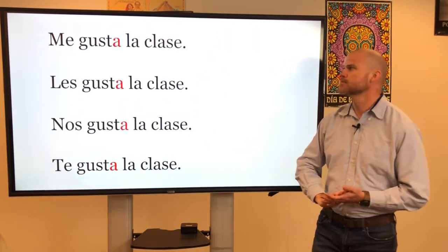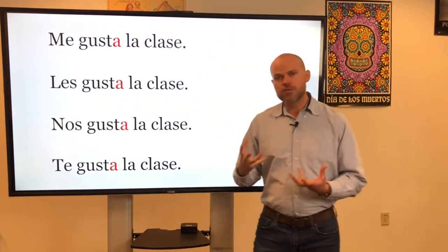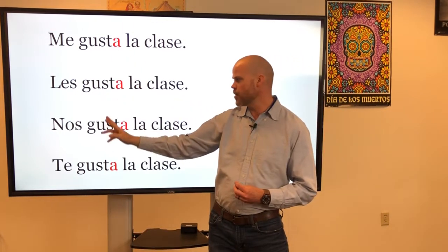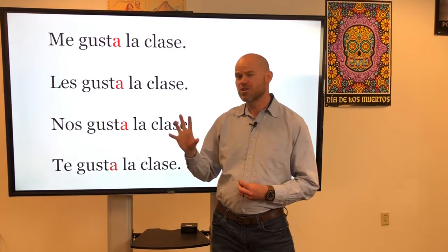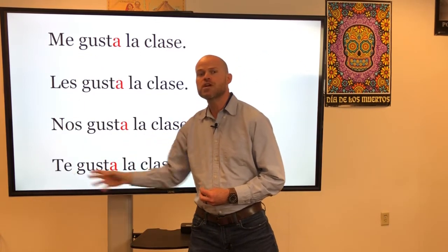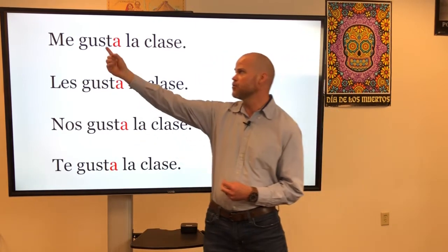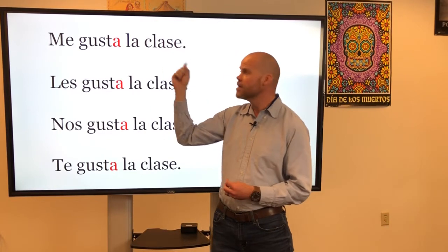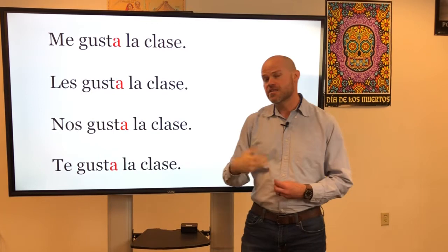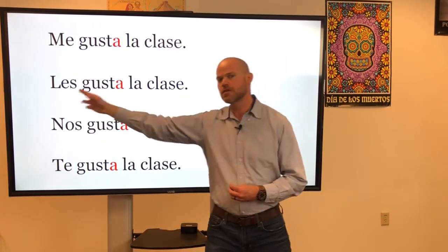When what we like is something singular, we use the singular form of gustar — that part isn't going to change. What does change is the pronoun, depending on who is liking. For example, I like the class — me gusta la clase, or the class pleases me. They like the class — les gusta la clase, or the class pleases them. We like the class — nos gusta la clase, or the class pleases us.